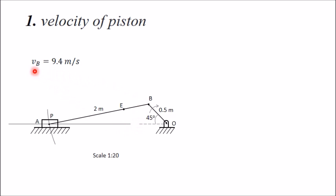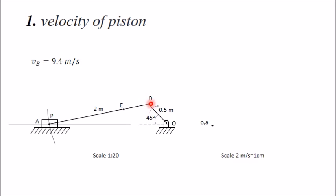Now draw the velocity diagram. The absolute velocity of B is 9.4 m/s. Using a scale of 2 m/s = 1 cm, this corresponds to 4.7 cm. First, mark all fixed points O and A at one place. Then draw a line of 4.7 cm perpendicular to OB in the appropriate direction to obtain point b in the velocity diagram.